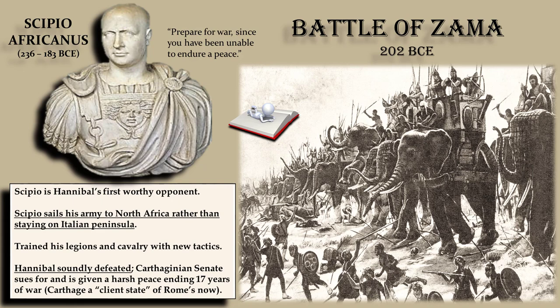Scipio Africanus handed Hannibal his defeat. The definition of insanity, as many of us know, is doing the same thing over and over again and expecting a different result. For whatever reason, Rome decided to institute another harsh Carthaginian peace at the end of the Second Punic War, just as they did in the first. Guess what happened? A third Punic War.